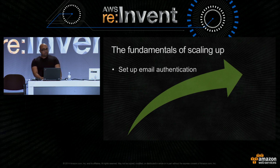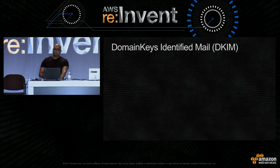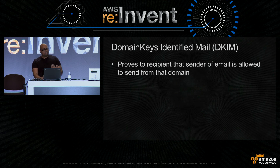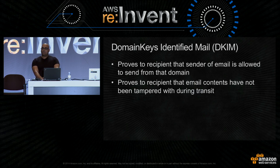The main one we're going to talk about is Domain Keys Identified Mail, or DKIM for short. DKIM is an email authentication standard that lets you add a cryptographic signature to your emails. Using the signature, a recipient can validate that you are a legitimate sender. They can prove that the sender is actually allowed to send from that domain in a strong cryptographic manner, and they can prove that the email has not been altered or tampered with during transit.